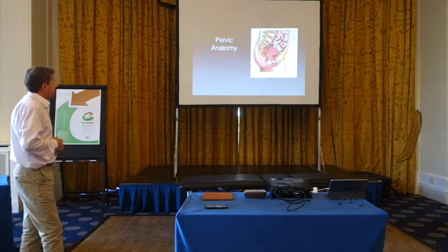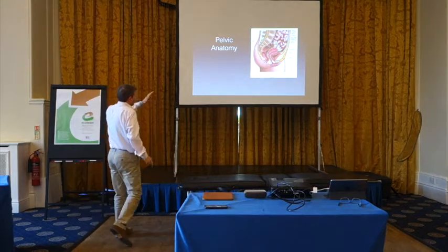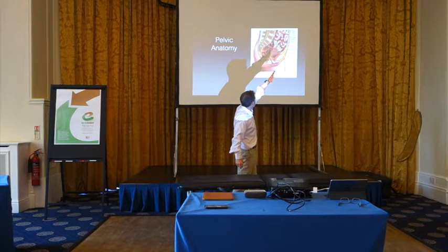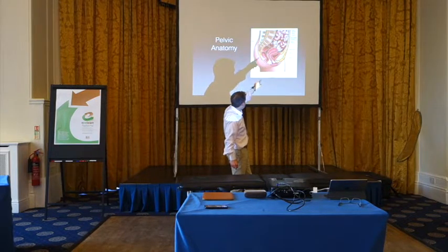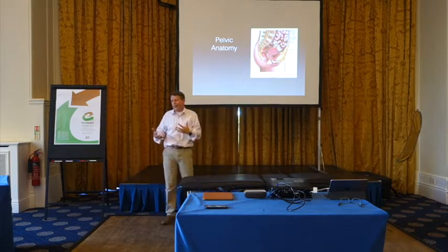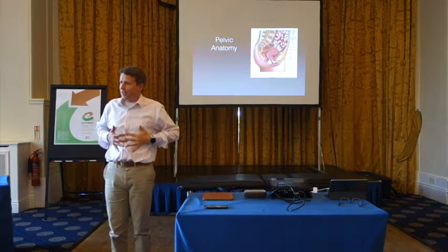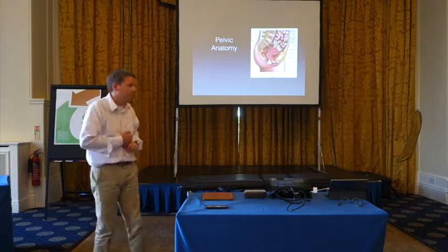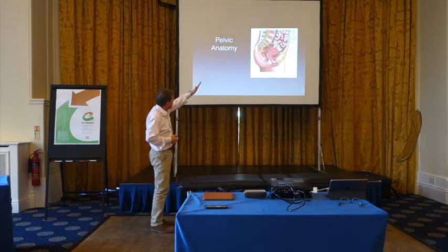Now for a quick revision of basic pelvic anatomy. This image shows adhesions within the abdomen — bowel adhesions higher up that can influence structures lower down. Whenever we think about treating stress incontinence or dysmenorrhea, we have to look at the abdomen and diaphragm, because they all bear weight down on the pelvis and all have an influence on circulation.